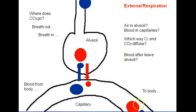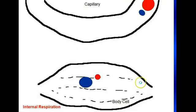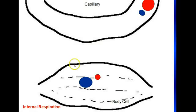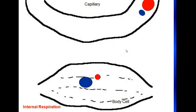Now let's follow this blood to the body. It will first go to the left side of the heart, which will then pump it out to the body. It will go through a large number of blood vessels until it gets down to a capillary, which again has a thin membrane. Every cell of the body needs to be close to a capillary, because this is how it gets its oxygen and gets rid of its carbon dioxide.